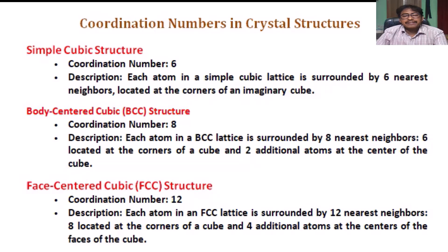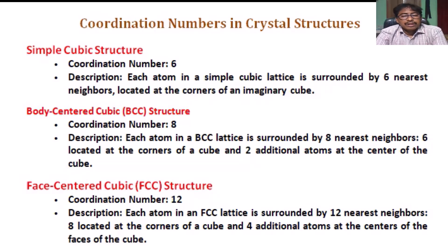Face Centered Cubic (FCC) Structure, Coordination Number 12. Each atom in an FCC lattice is surrounded by 12 nearest neighbors: eight located at the corners of a cube and four additional atoms at the centers of the faces of the cube.